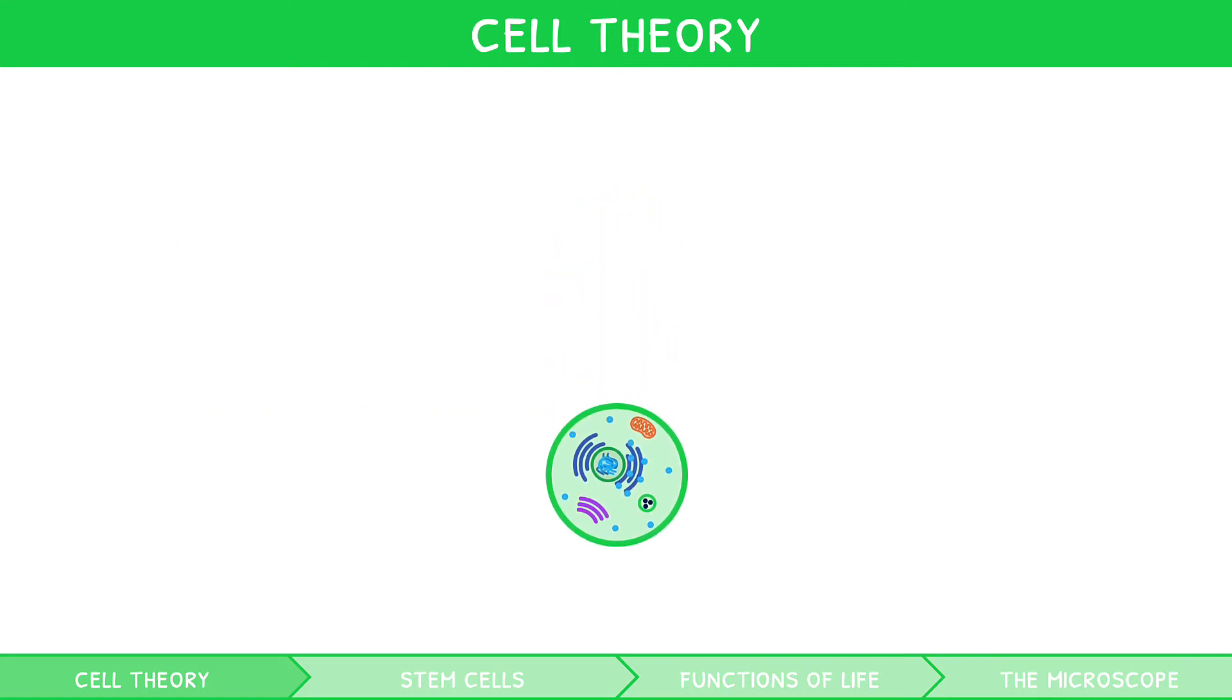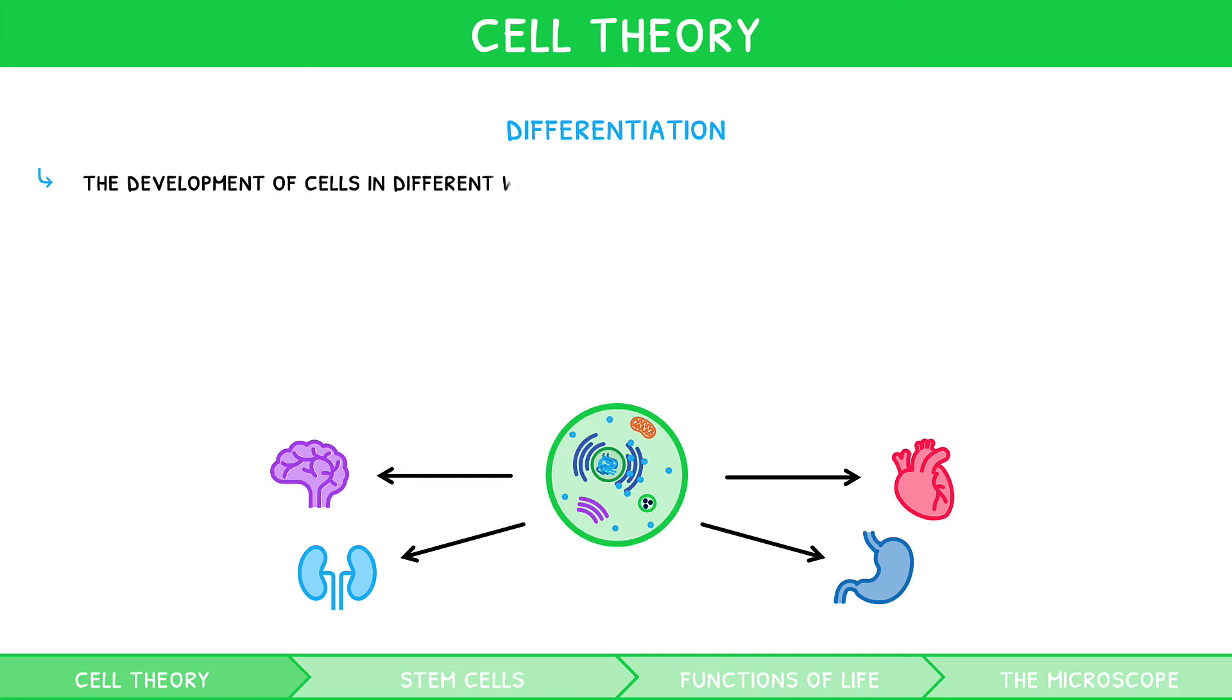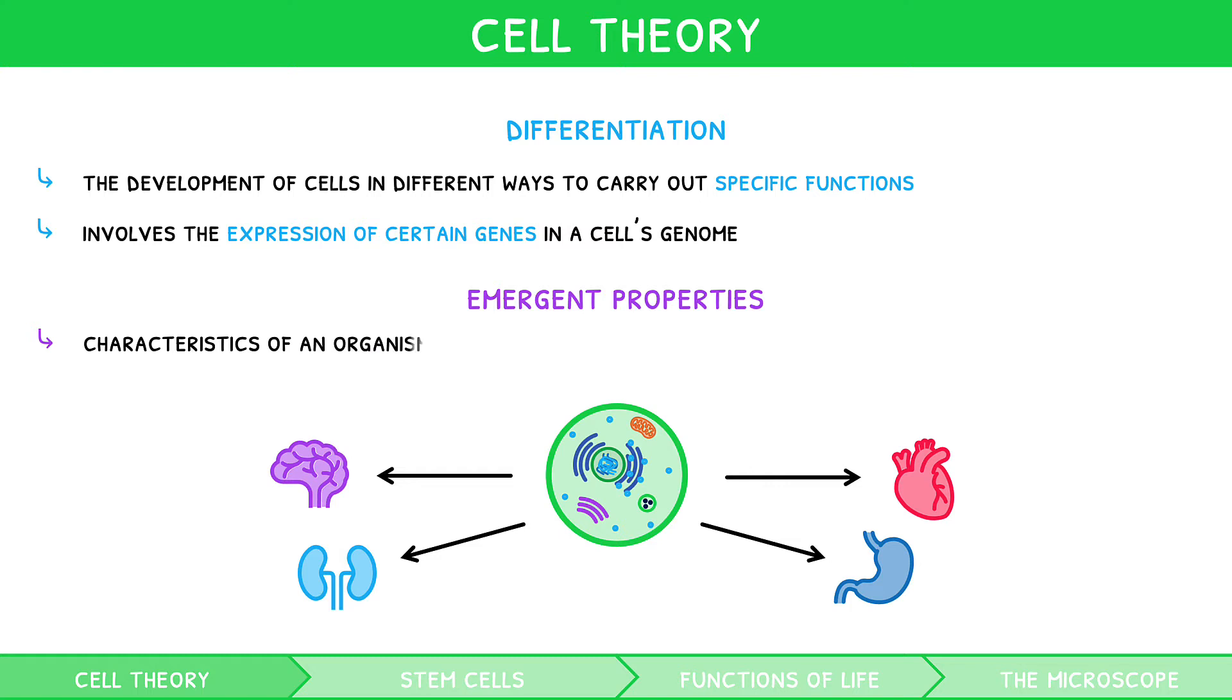Some cells can change into different types. This is the process known as differentiation. Differentiation can be defined as the development of cells in different ways to carry out specific functions. It involves the expression of certain genes in a cell's genome and enables what are called emergent properties. Emergent properties are characteristics of an organism not evident on a cellular level created by interactions between cells.